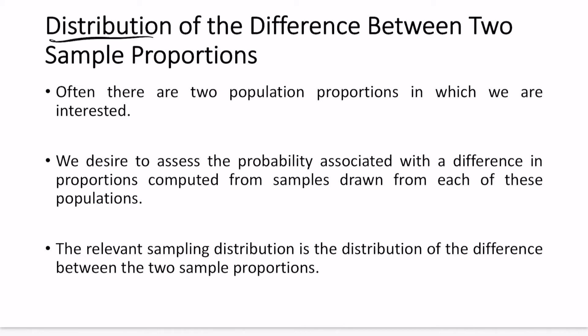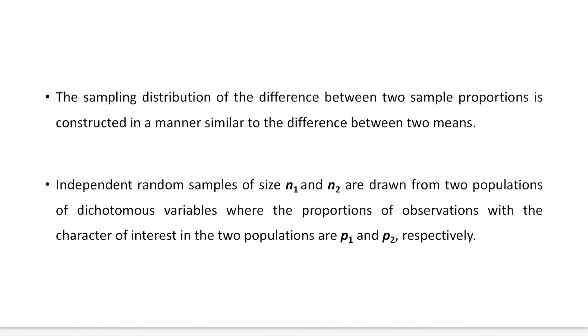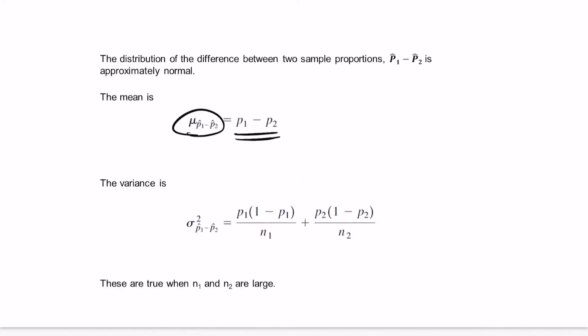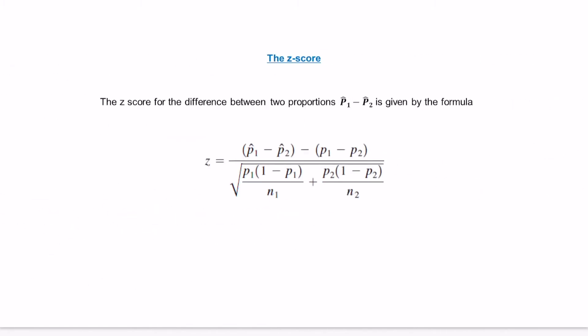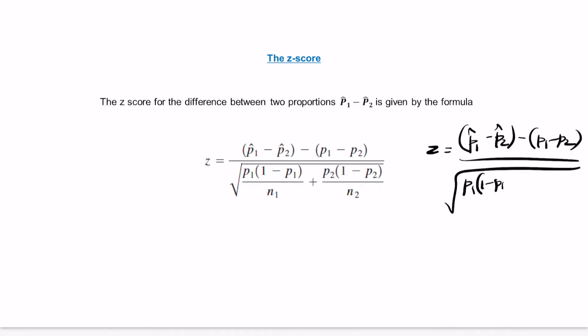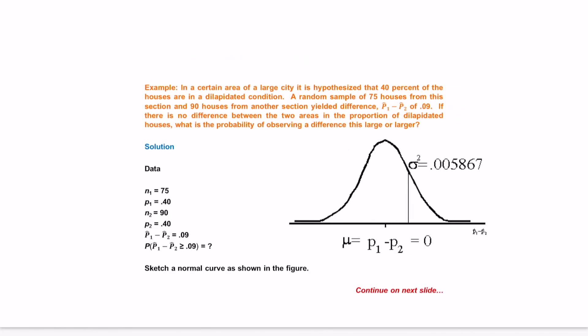Next topic: the distribution of the difference between two sample proportions. Similar to the difference of two sample means, we have two samples n1 and n2 from two populations with proportions p1 and p2. The mean is p1 minus p2, and the expected value is p1-hat minus p2-hat. The variance formula is: sigma-squared equals p1(1-p1)/n1 plus p2(1-p2)/n2. The z-score formula is: z equals (p1-hat minus p2-hat) minus (p1 minus p2), divided by the square root of p1(1-p1)/n1 plus p2(1-p2)/n2.